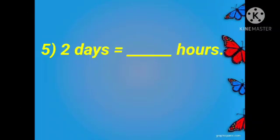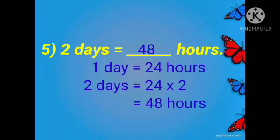Number 5. Two days equal to dash hours. Yes, we know that 1 day is equal to 24 hours. So, 2 days, we will multiply 24 into 2 and we will get 48 hours. So, in 2 days, 48 hours will be there.